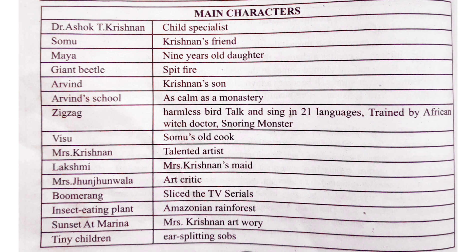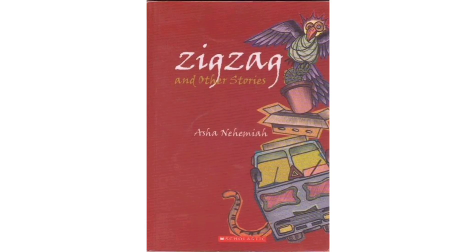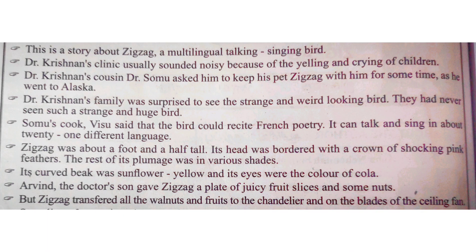It is an interesting story. Now let's move to the supplementary. This is a story about Zig-Zag. Who is Zig-Zag? Zig-Zag is one bird — a multi-talking bird. He can talk in 21 languages. Zig-Zag is talking about 21 languages and is also a singing bird. This is a nice and different bird.